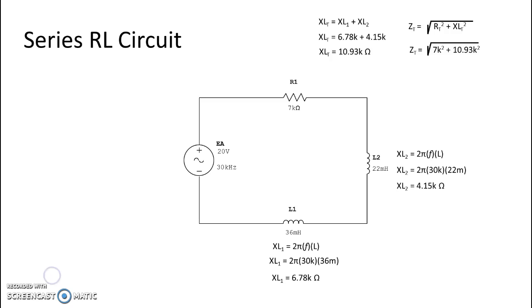So if I put my numbers in there I get a value of 12.98k ohms which is the total ohmic value for this circuit. Once I have that total ohmic value I can take Ohm's law and use voltage divided by that ohmic value to get total current.